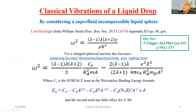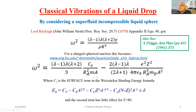If you want to look at vibrations of a liquid drop, you can do this by looking at a superfluid incompressible liquid sphere, which John William Strutt did 150 years ago. You get the frequency of oscillation — squared here for simplicity — proportional to the surface tension gamma divided by the density and radius cubed. You can prove this with dimensional analysis and you get a formula like this.